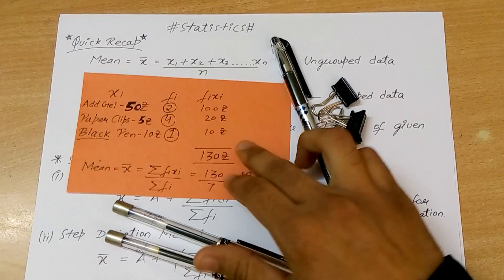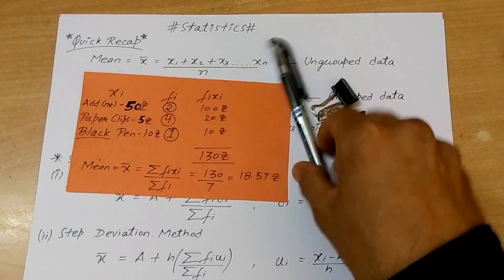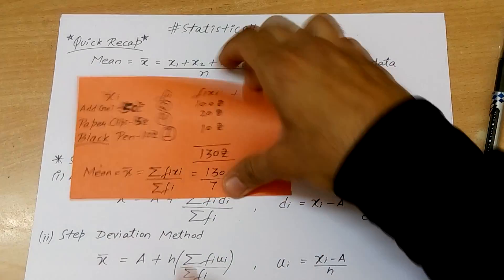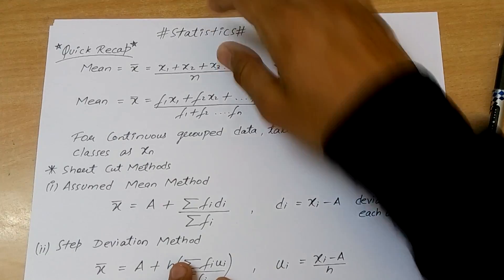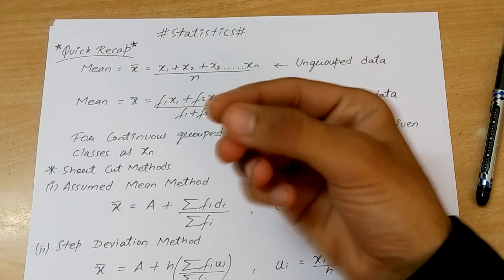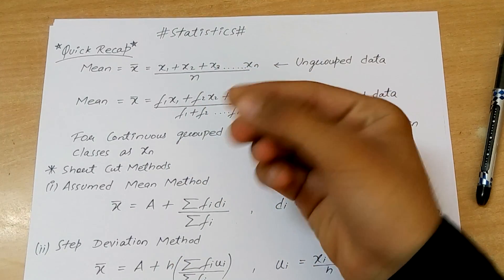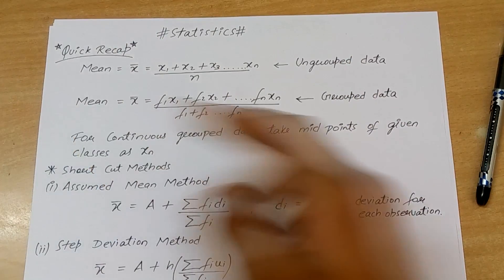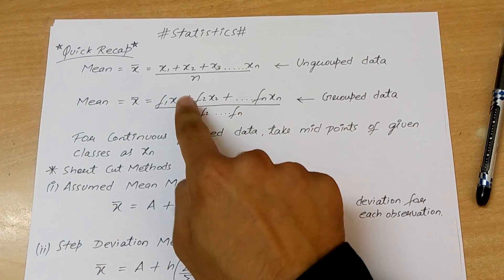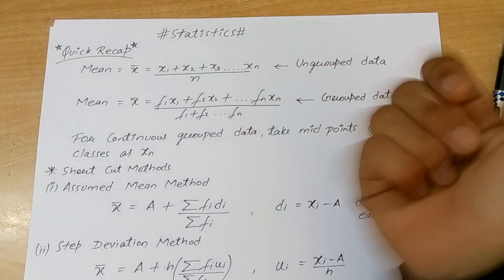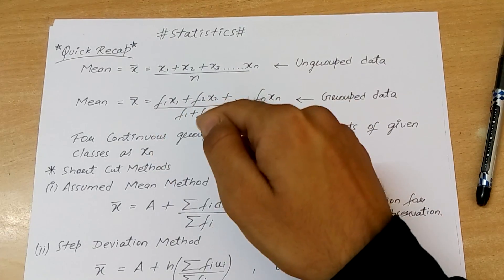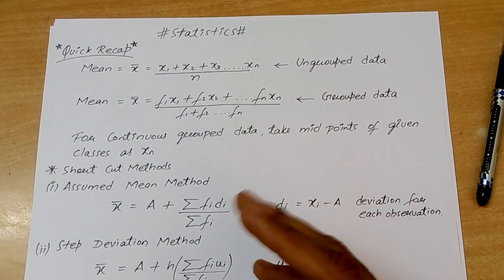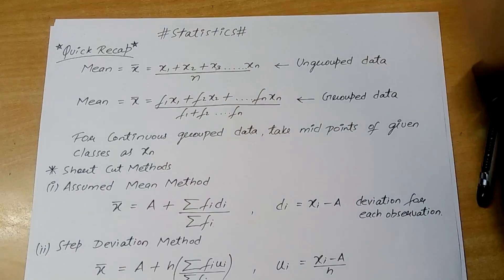This is for ungrouped data. For continuous grouped data, we'll just have to take midpoints — for example, if we have 100 to 200 we'll take 150 as the midpoint — and we'll do the same calculation as before. But these methods are very complex when frequencies are in the order of thousands or lakhs.